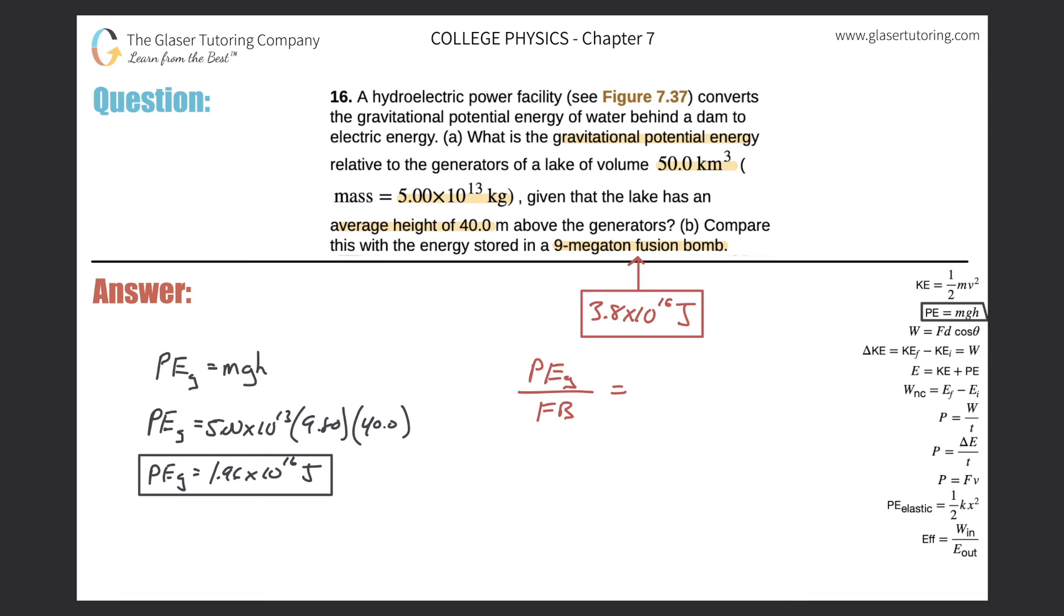1.96 times 10 to the 16th over 3.8 times 10 to the 16th. Okay, and you can plug that into your calculator. And we're going to get a value of about 1.96 divided by 3.8. Yeah, it's about 0.51. So 0.51. And if you wanted to convert that to a percent, it's about 51%. All right?